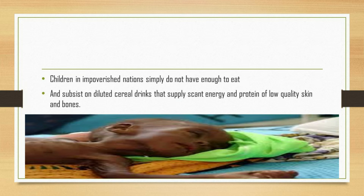Marasmus can affect anyone who lacks overall nutrition, but it particularly affects children, especially infants, who require more calories to support their growing bodies. It is more common in developing countries with widespread poverty and food scarcity, where parasites and infectious diseases may contribute to calorie depletion. When the body is deprived of energy from food, it begins to feed on its own tissues—first adipose tissue (body fat), and then muscles. It also begins shutting down some functions to conserve energy. Cardiac activity slows down, causing low heart rate, low blood pressure, and low body temperature.